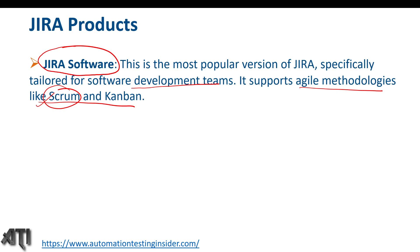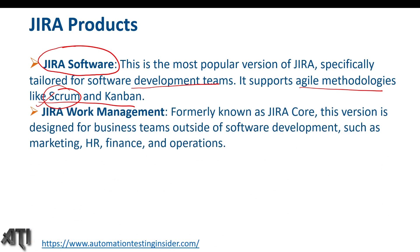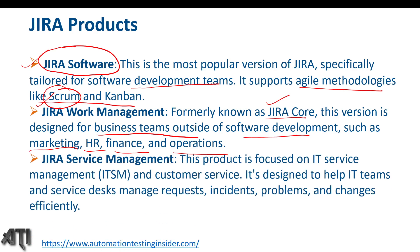I'll practically show you what is the difference between Scrum and Kanban projects. The second product is Jira Work Management, formerly known as Jira Core. This version is designed for business teams outside of software development, such as marketing, HR, finance, and operations — so we can use Jira for those teams as well.